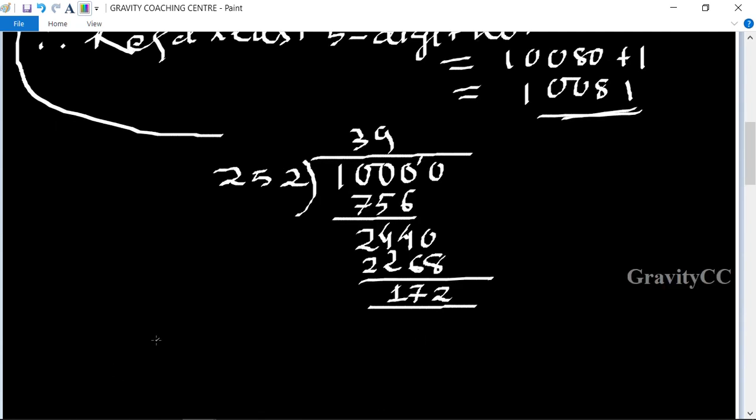So the remainder is 172. In this case, 10,000 equals 252 minus 172.